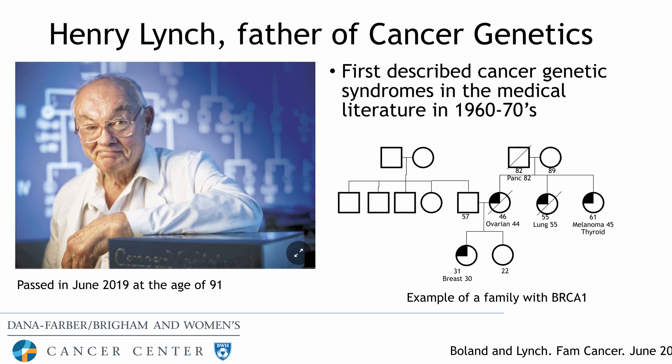In family pedigrees, circles represent women, squares represent men, with notation indicating when people are diagnosed with cancer, what type, and at what age. In this example, a family with a BRCA1 mutation — a woman diagnosed with breast cancer at age 30, and her mother had ovarian cancer at age 44 and died at age 46. When we collect this information in the clinic, this is a family where we would recommend cancer genetic testing.